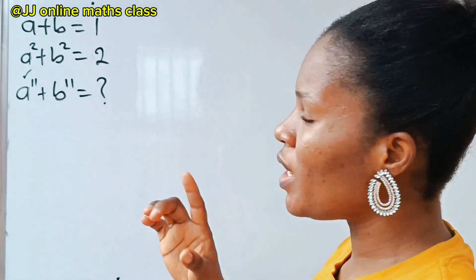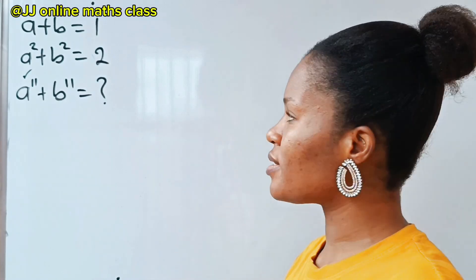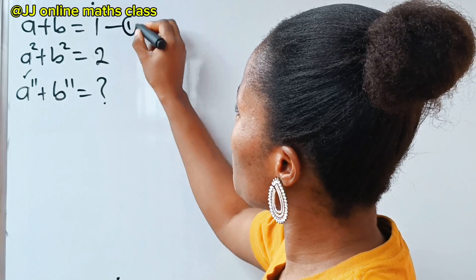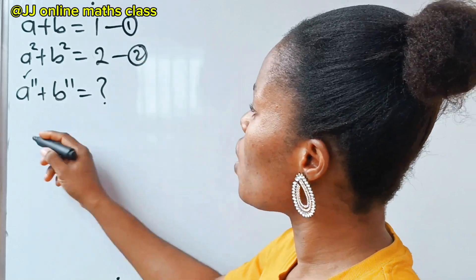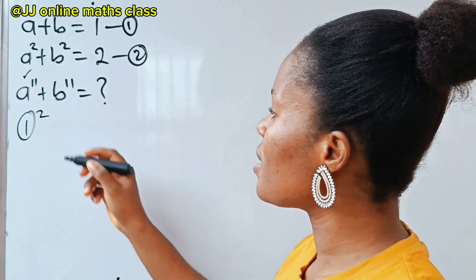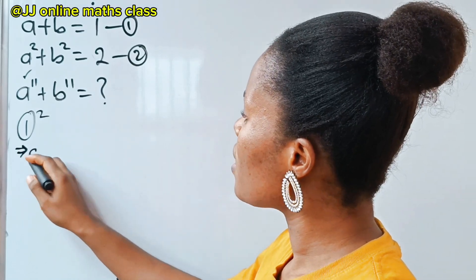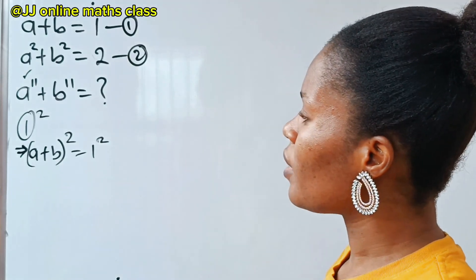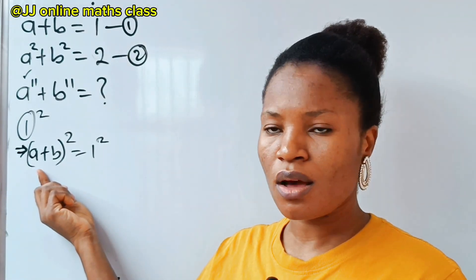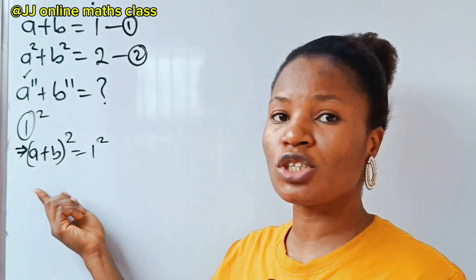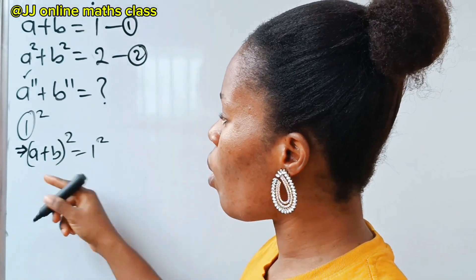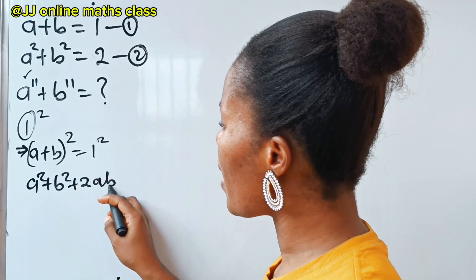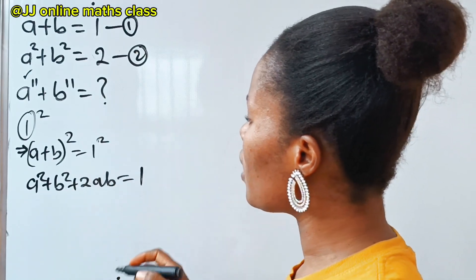So let's do this together. First, we need ab. To get ab, we are going to square the first equation. So let's call this equation 1 and this equation 2. If I square equation 1, I'm going to have a plus b squared is equal to 1 squared. Now, this is the algebra identity: a plus b squared is equal to a squared plus b squared plus 2ab, which is equal to 1.